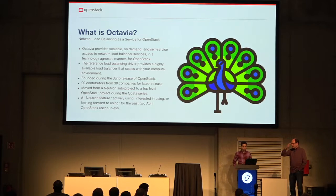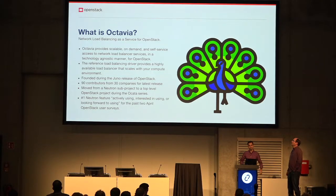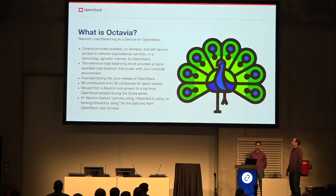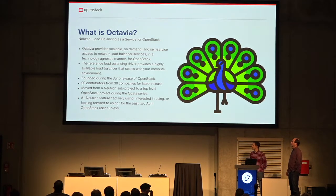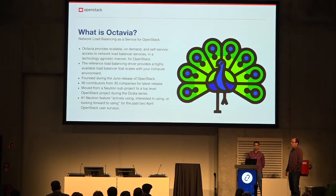So what is Octavia? Let's start at the beginning. Octavia is the load balancing project for OpenStack. We provide a scalable, on-demand, self-service load balancer which runs on virtual machines or whatever else. We have the reference load balancing driver — that's the one with the virtual machines — which scales with your compute environment. It was founded during the Juno cycle of OpenStack.